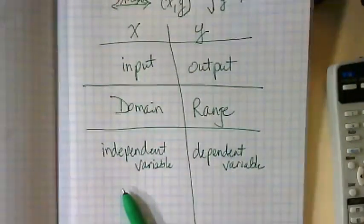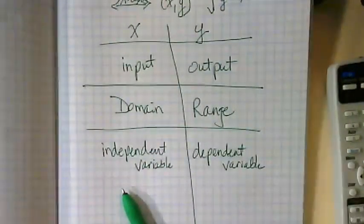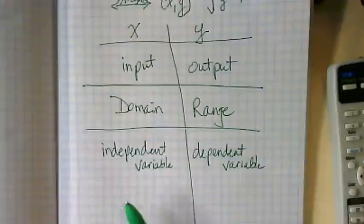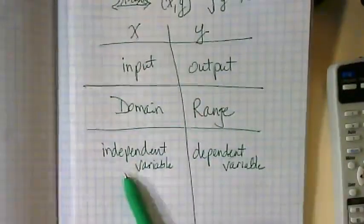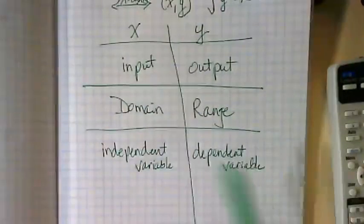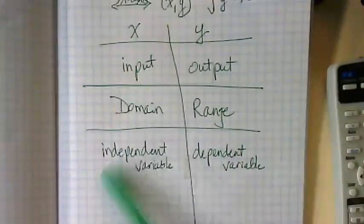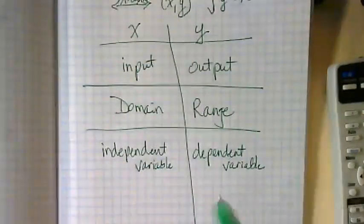So we might be doing gallons of gas or pounds of oranges or something like that. The pounds, the gallons would be the independent, and the cost you pay depends on how much of the other you buy. That's what we've graphed. That's what we mean by independent here and dependent here.